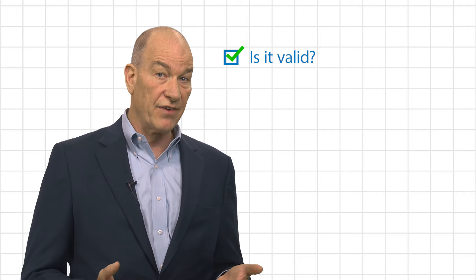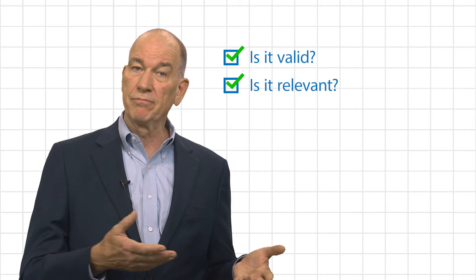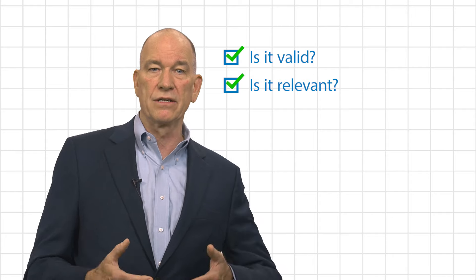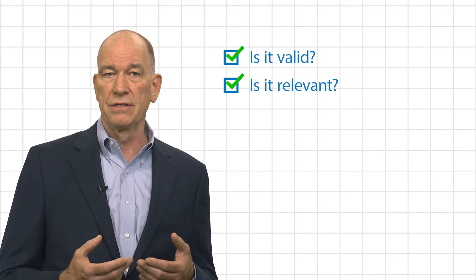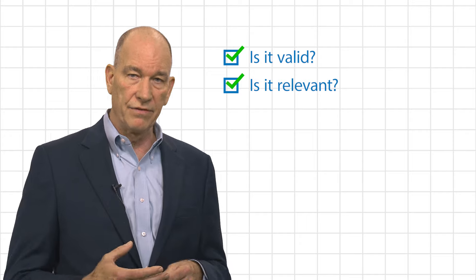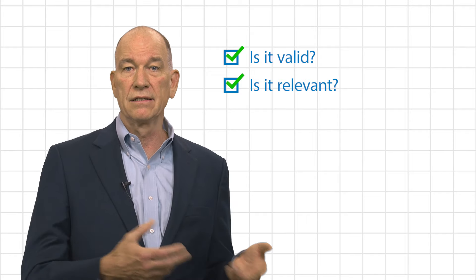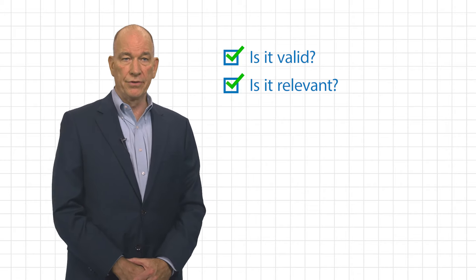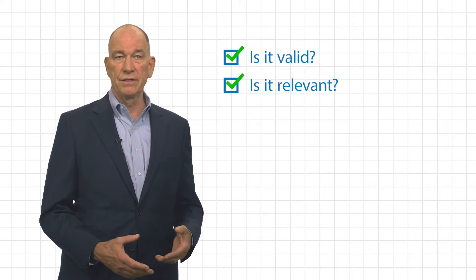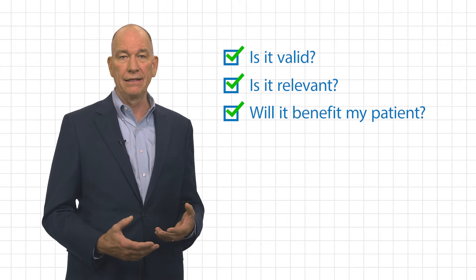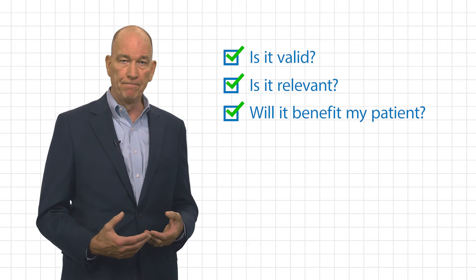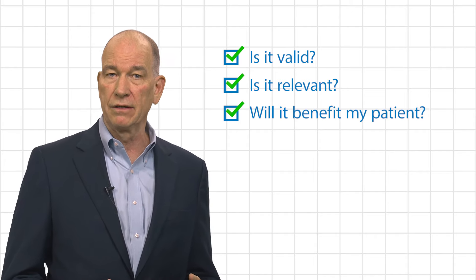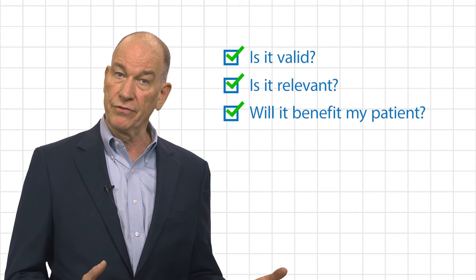Once it can be determined that evidence is valid, the next question one should ask is: does this evidence apply to my patients? This requires a dentist to make an informal assessment of things such as how similar are the patients in this study to my patients, and is the severity of the disease found in the patients in the study similar to the ones that I treat? Once the relevance of the evidence to one's own patients is determined, the final question one needs to consider is: if I adopt this approach to care, will it likely lead to better outcomes for my patients? In other words, if I use this treatment or diagnostic technique, will it offer a substantial clinical benefit compared to other treatment options or even to no treatment?